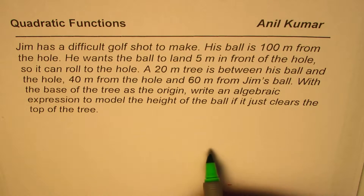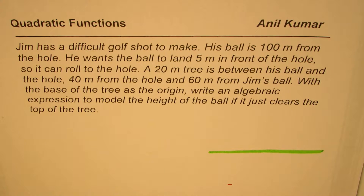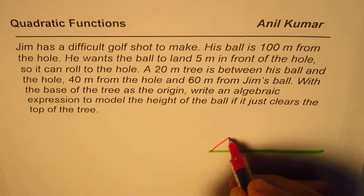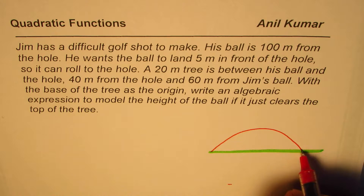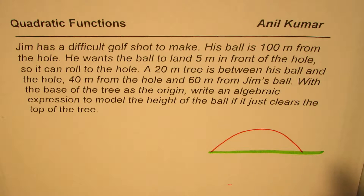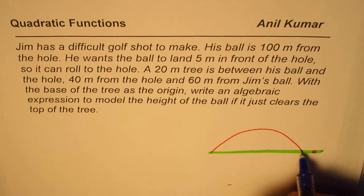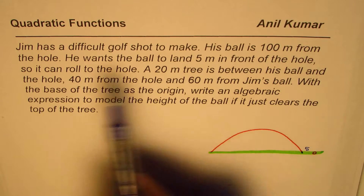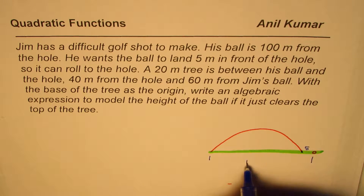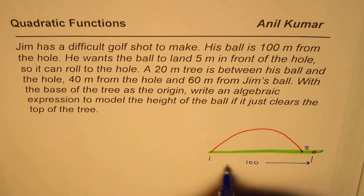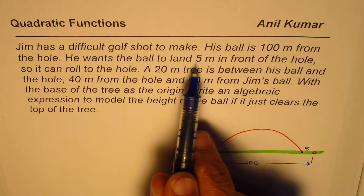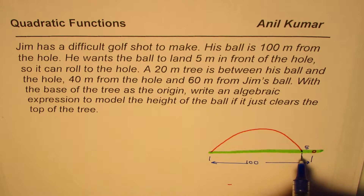Let us sketch the scenario first. So this is the golf course, and Jim wants to make a shot that takes a parabolic path, where it lands 5 meters before the hole so that it can roll to the hole. This distance from where the ball lands to the hole is 5 meters. His ball is 100 meters from the hole, so that total distance is 100 meters. He wants the ball to land 5 meters in front of the hole, so the landing point is 95 meters from Jim.